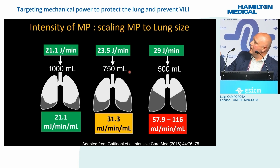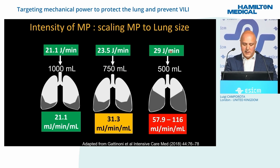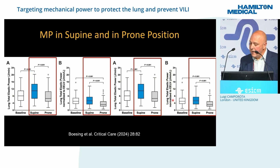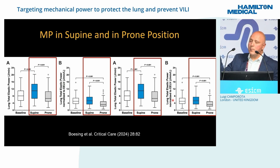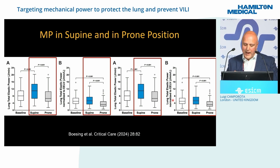If you deliver mechanical power to a large lung volume and divide it per milliliter of FRC, the value increases as lung volume decreases — meaning severity increases. Standardized mechanical power based on FRC measured with CT scan demonstrates this clearly. For example, in patients going from supine to prone: if prone positioning improves aeration and the lung becomes bigger, the mechanical power per milliliter decreases despite total mechanical power remaining the same, reflecting the improvement in aeration.